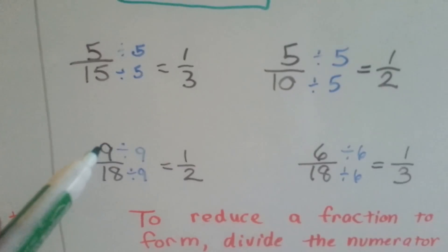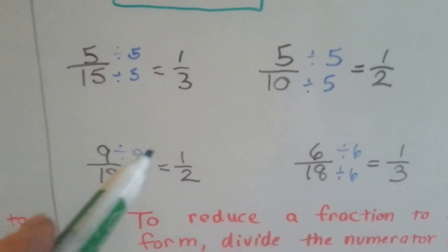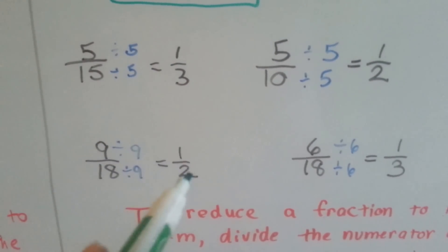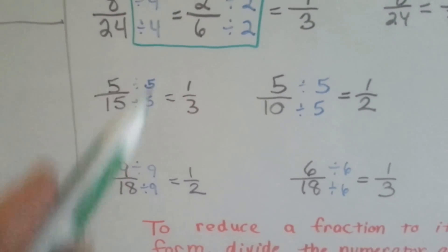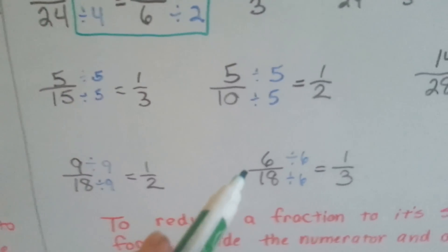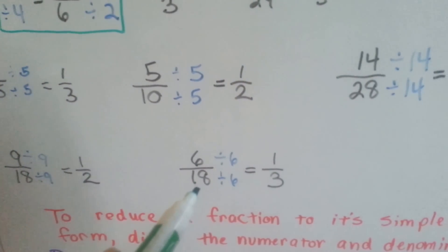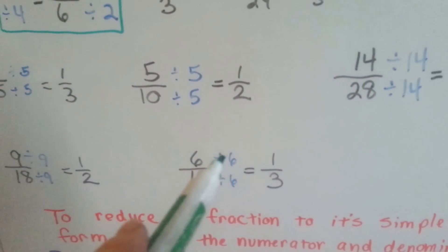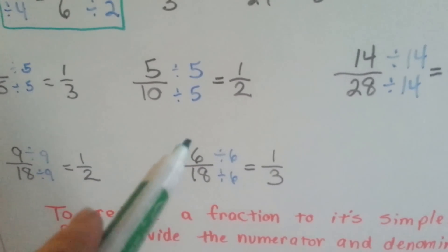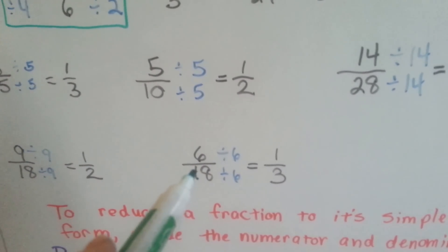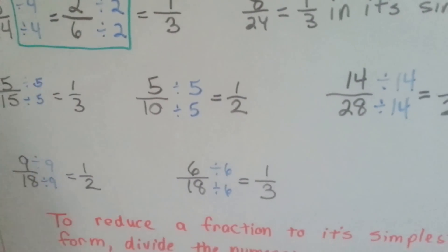Pick the biggest number you can. 9 eighteenths can be divided by 9. 9 divided by 9 is 1. 18 divided by 9 is 2. What if we had chosen 3? We would have had extra work. We would have had to do it a couple of times. 6 eighteenths is divided by 6 for the numerator and denominator. That'll make 1 third. What if we had chosen 3? We would have had to do extra work.